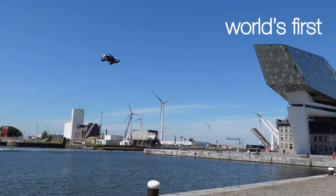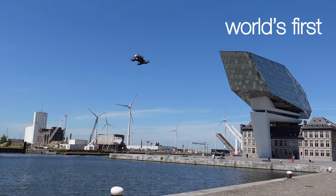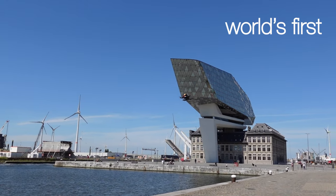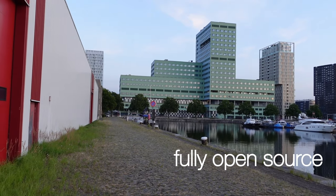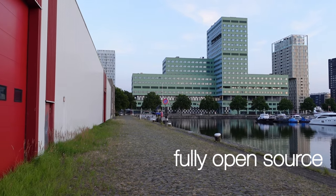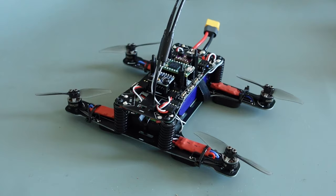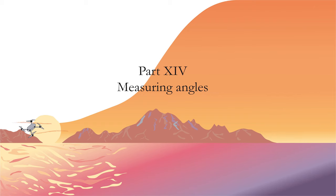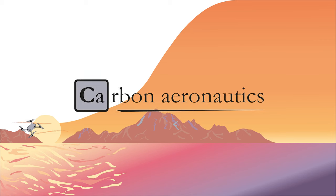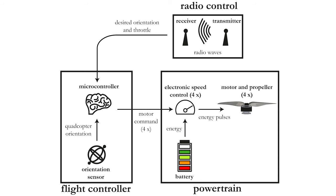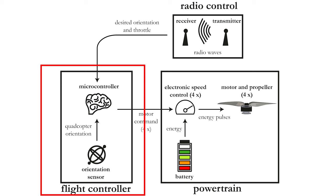Welcome to the next video in our series explaining how to build your own Arduino quadcopter drone. In this video we will explore how you can measure angles with the help of the MPU6050 gyroscope and accelerometer, which will subsequently be used to design a different type of flight controller.